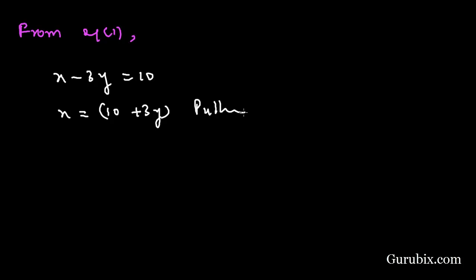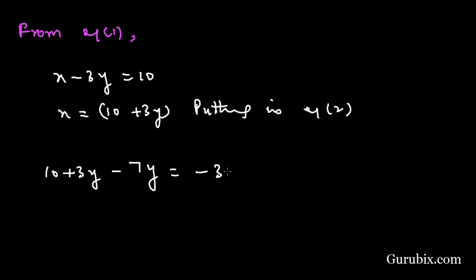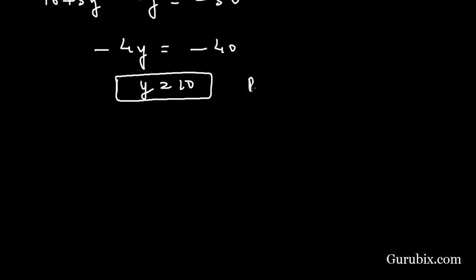Substituting X equals ten plus three Y into Equation 2: ten plus three Y minus seven Y equals minus thirty. This simplifies to minus four Y equals minus forty, which means Y equals ten.